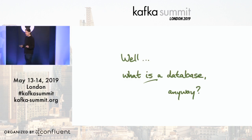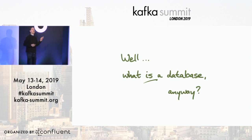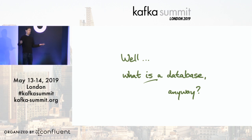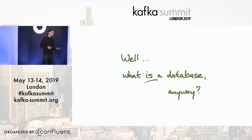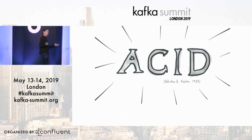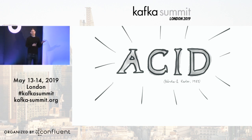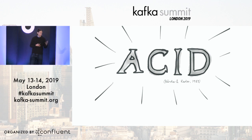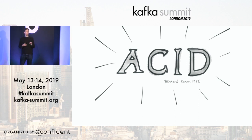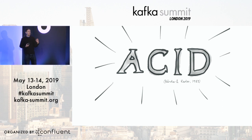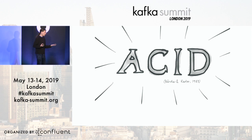To start, we have to actually define a bit more carefully what we actually mean by a database. What is it that makes a database a database? For the purposes of this talk, the definition I'm going to use is a database is a thing that provides ACID properties. You have probably heard of these in the context of relational databases. The properties are atomicity, consistency, isolation, and durability. I'm going to go through each of those in a bit more detail and see what those terms might mean in the context of something like Kafka.